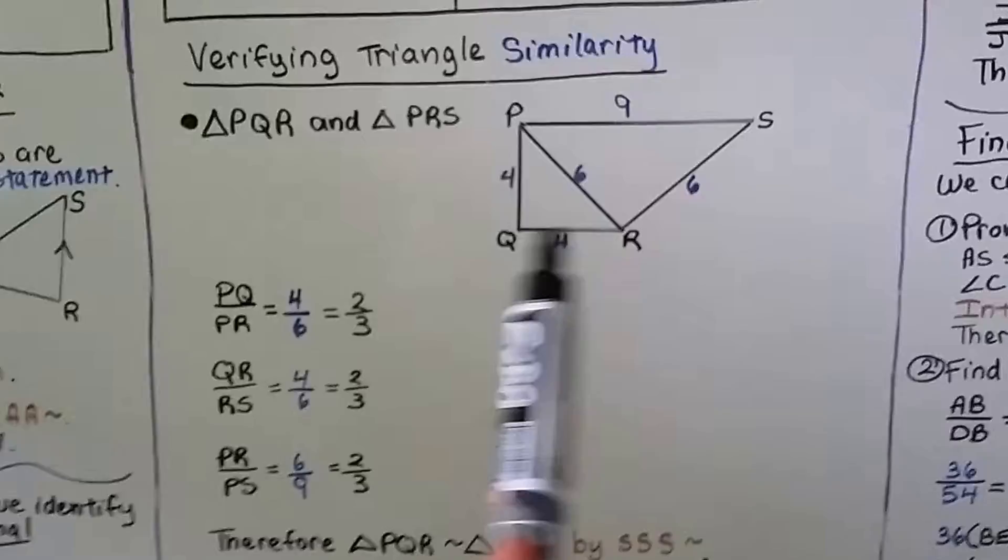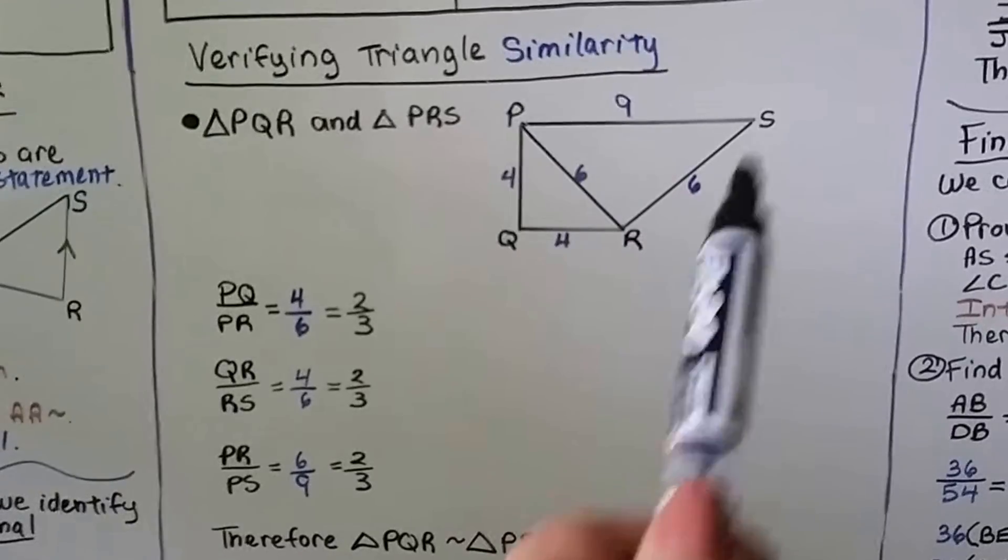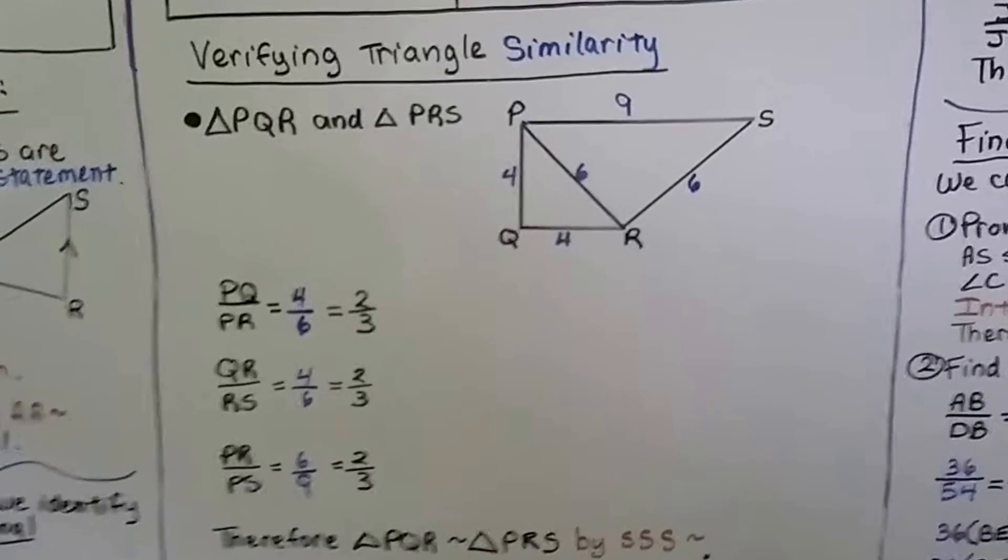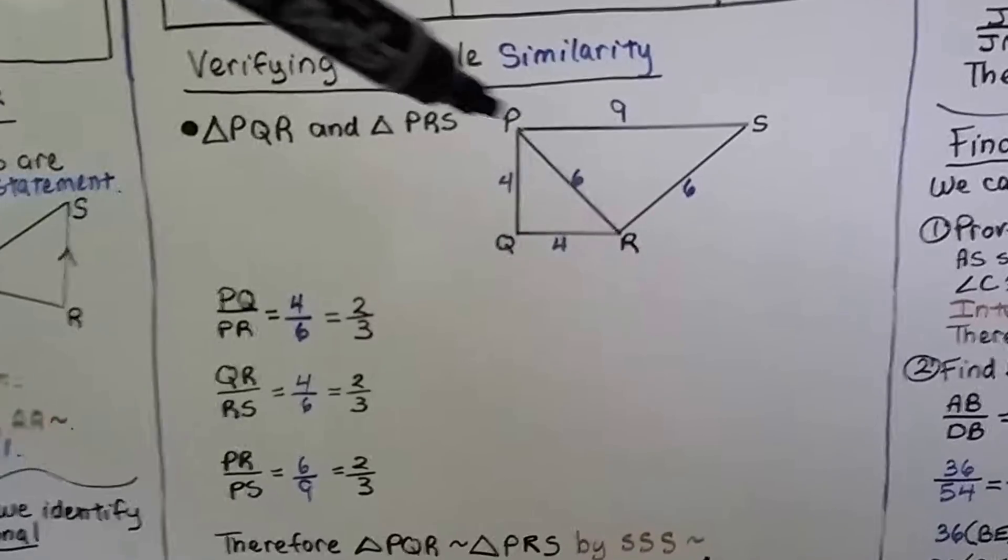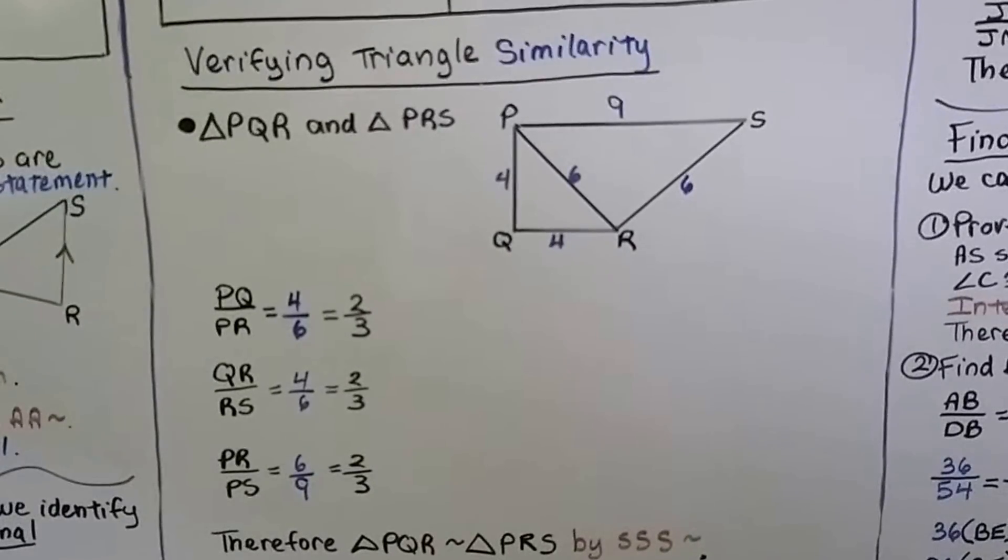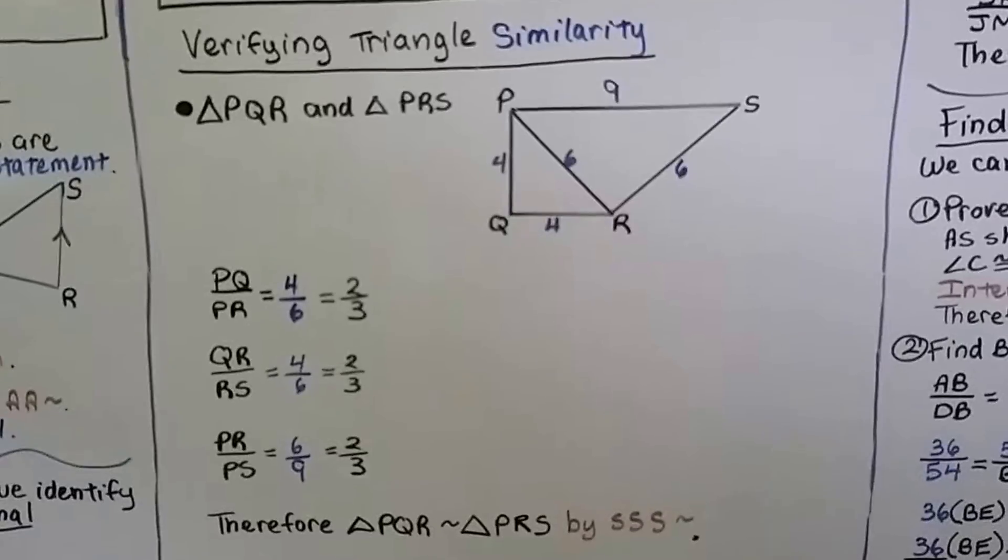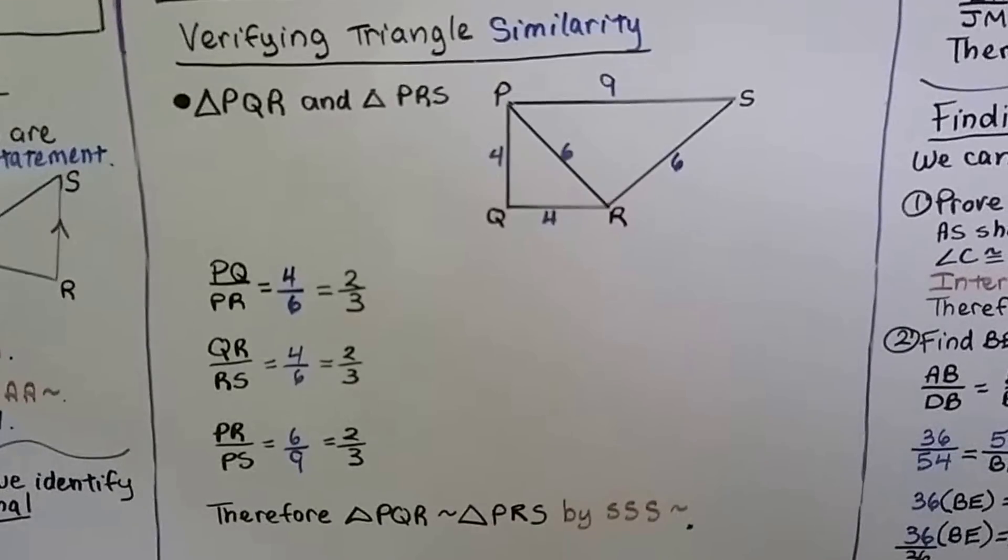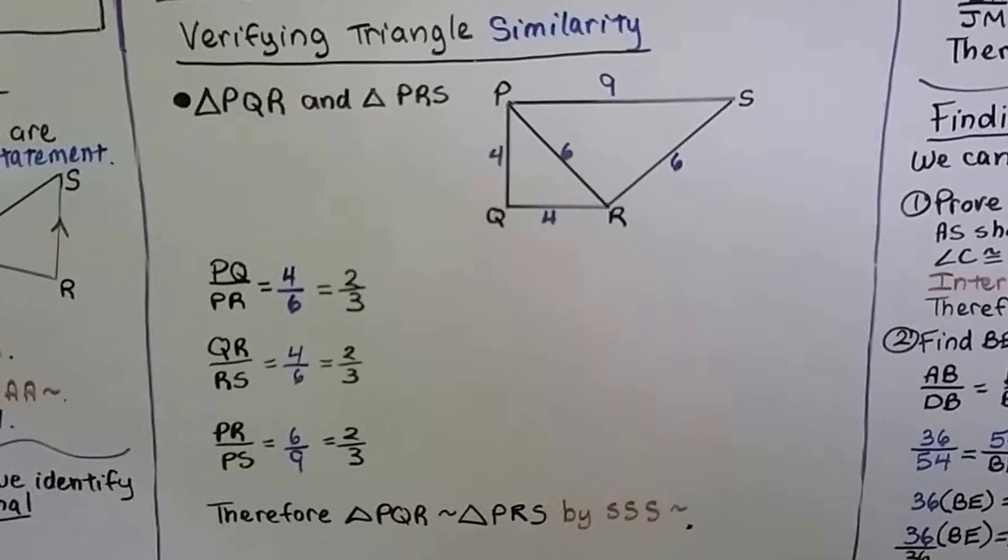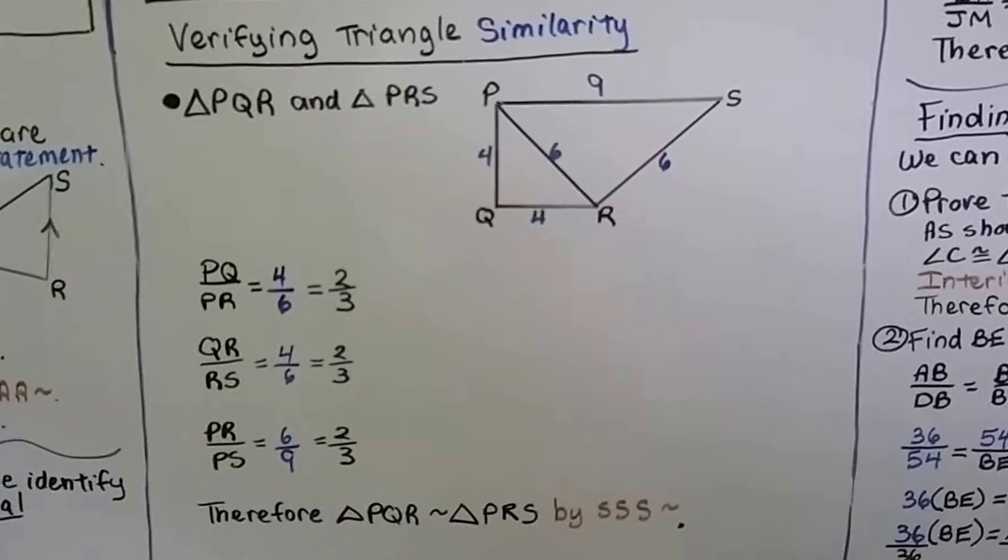QR is a 4 and it corresponds to RS that is a 6, that also simplifies to 2 thirds. And PR, this 6, corresponds to PS that 9, and that simplifies to 2 thirds. Therefore, triangle PQR is similar to triangle PRS by SSS similarity.